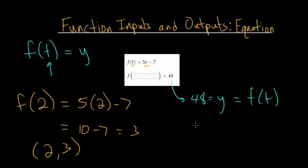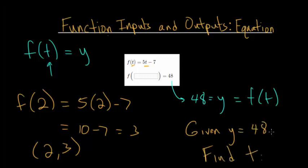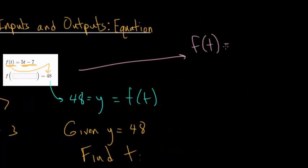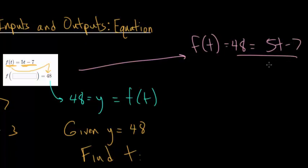In this case we are given that y is 48 and we have to find t. Since we know that the function is the same as the y value, we're going to replace f(t) with what it's equal to — 48. We're going to set 5t minus 7 equal to 48. So we have that f(t), which is 48, is also equal to 5t minus 7, and now we have an equation we can solve to figure out what t is.